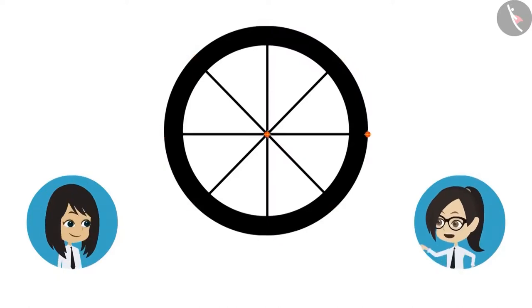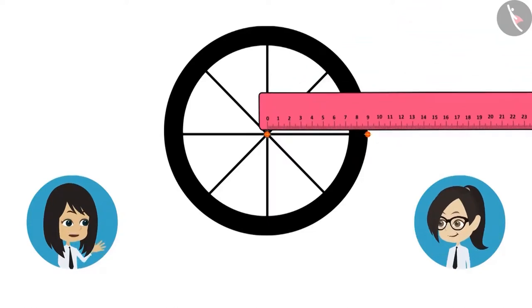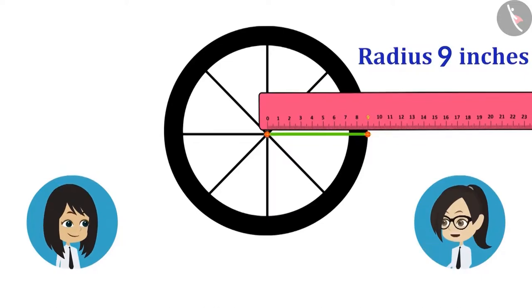Now let's measure the distance between these two points using a scale. Radius of the wheel of bicycle is 9 inches. Let's now measure its diameter as well.